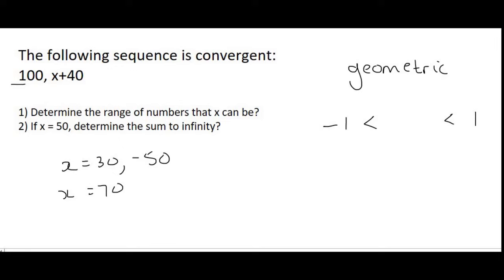Well we want the ratio to be between minus 1 and 1. How do you work out the ratio of this? Well if I gave you a sequence that went 2, 4, 8, 16 your ratio is 2 because it's 4 divided by 2.